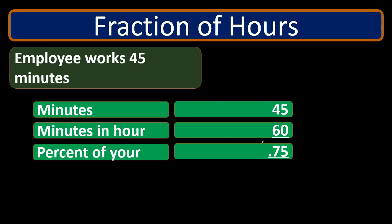This is important because when we have a rate, we don't want to take our hourly rate and multiply it by 45 minutes — that won't work. We have to multiply it by 0.75 hours.